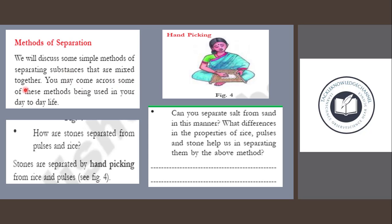You may come across some of these methods being used in your day-to-day life. How are stones separated from pulses and rice? Stones are separated by hand-picking from rice and pulses. See Figure 4.